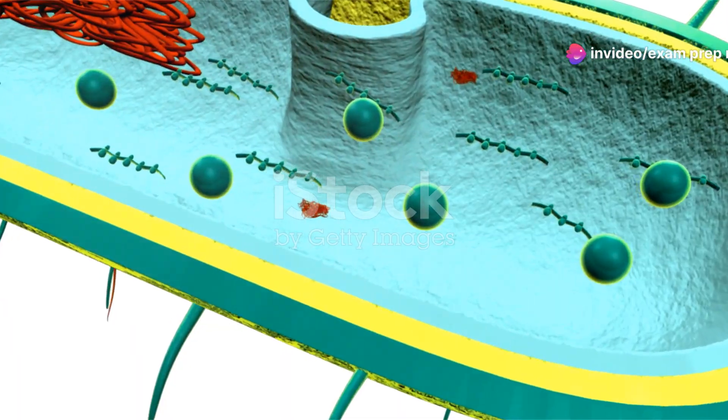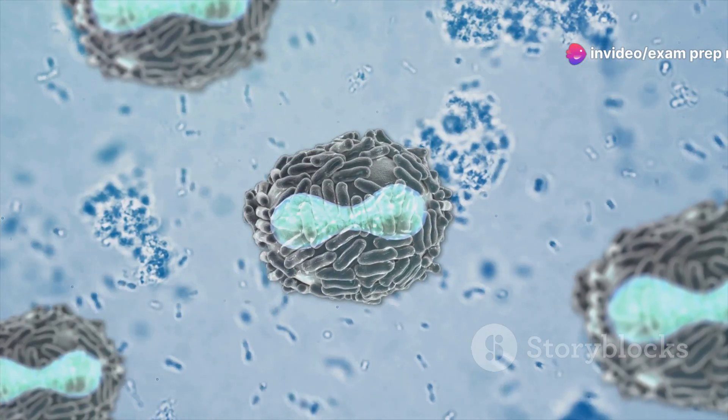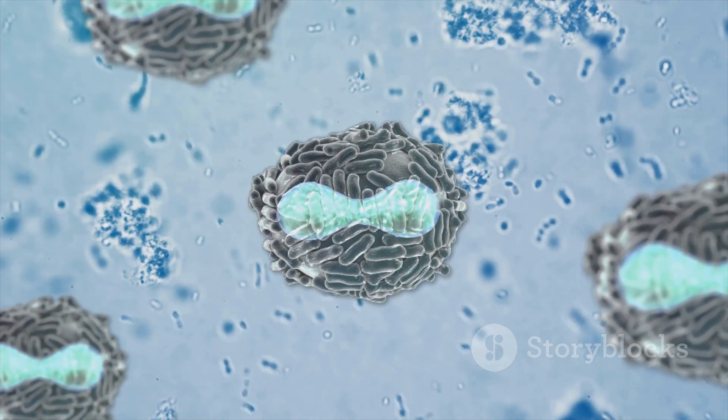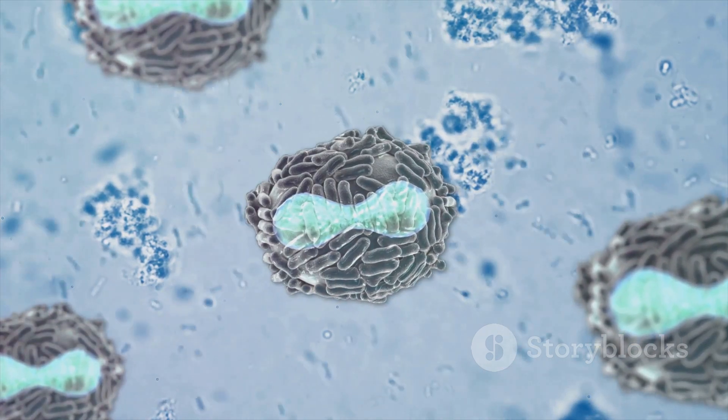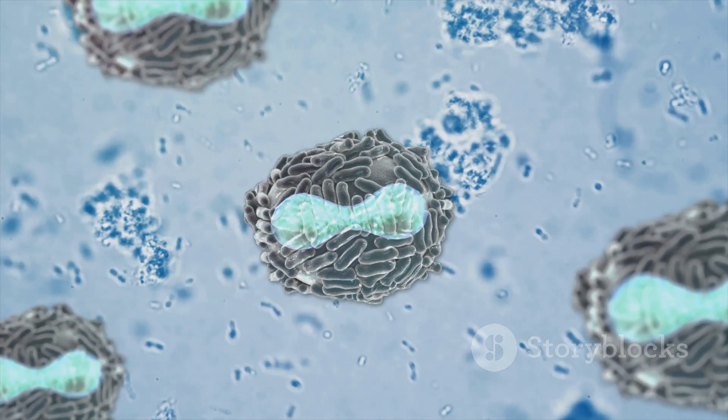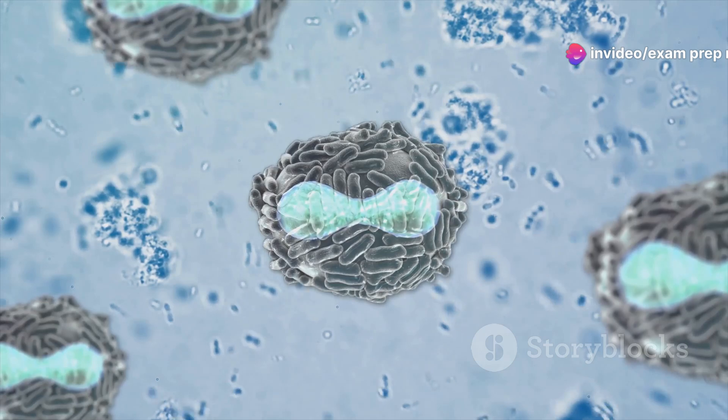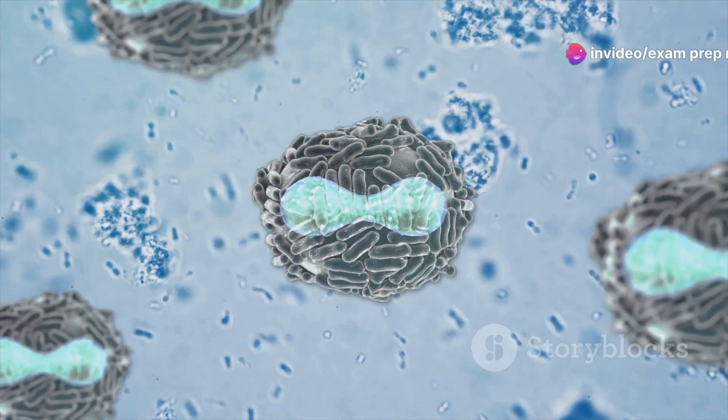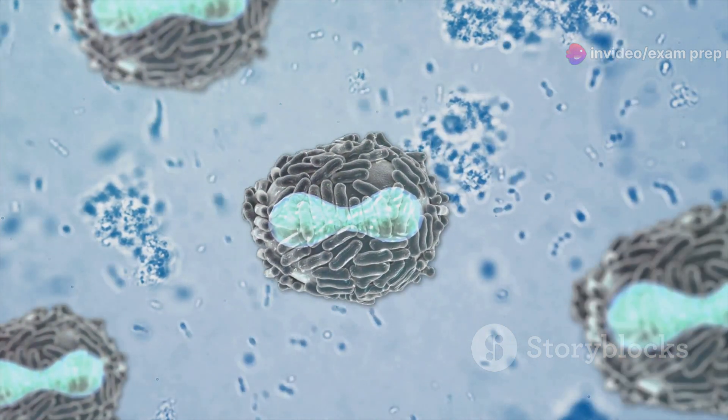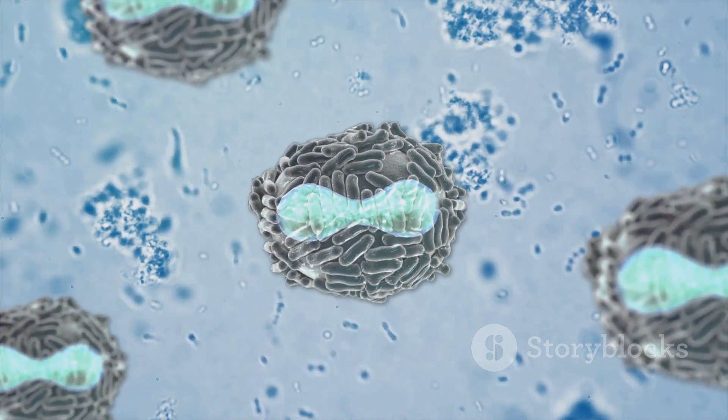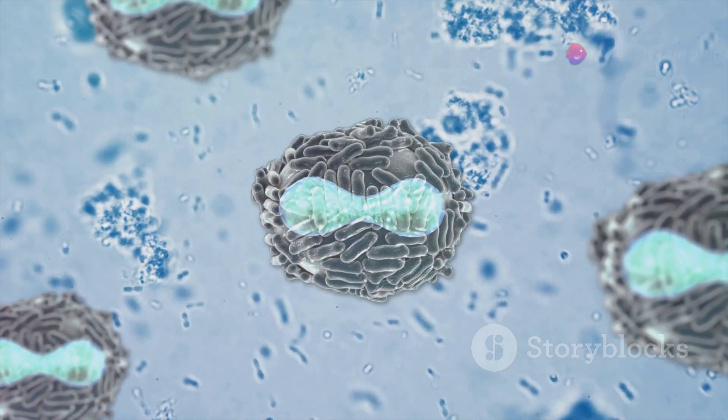Now that we've met some bacteria and learned about their shapes, let's journey inside and explore their structure. Don't forget your microscopic goggles. The first thing you'll notice is the cell wall, a tough outer layer that gives bacteria their shape and protects them from bursting. Just beneath the cell wall lies the plasma membrane, a thin, flexible layer that controls what enters and exits the cell.